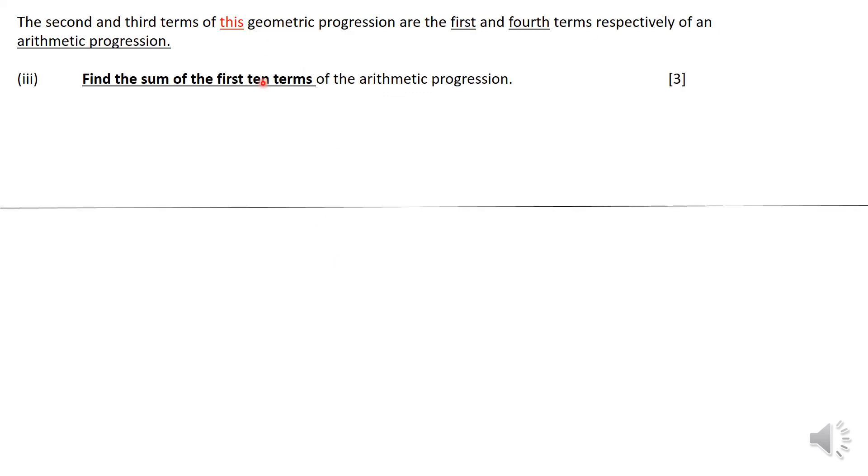The third part of that question. I'm going to write down my information. For the GP, A is 81 and R is 2 over 3. Let me get the other terms. The first term is 81. The second term you get by multiplying by the common ratio, which is 54. Multiply that by the common ratio gives you 36. I just need the first three terms because I need term 2, term 1.